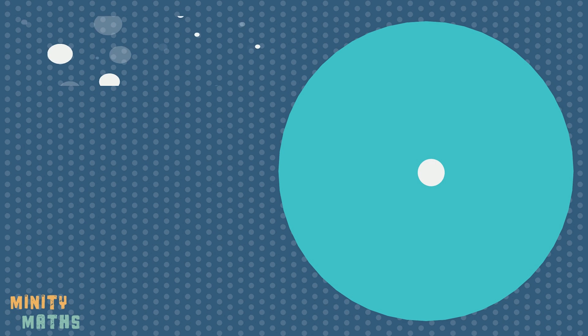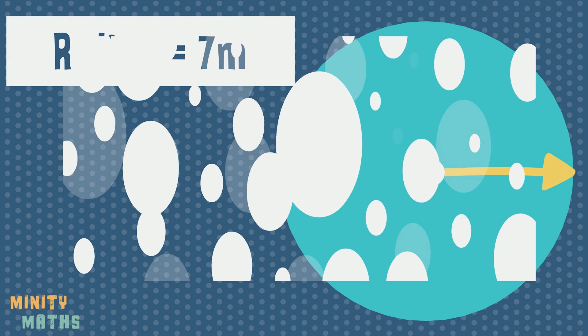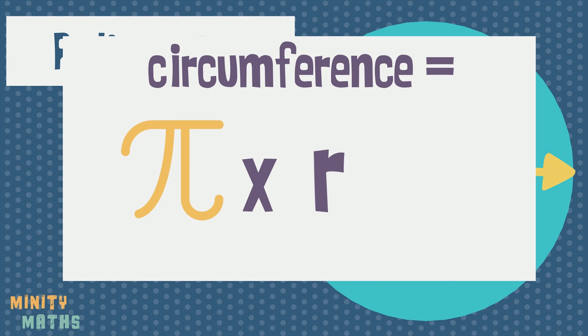But what if we are given the length of the radius rather than the diameter? Well, we know that the radius is half of the diameter, so we can just times the radius by Pi and then double it.